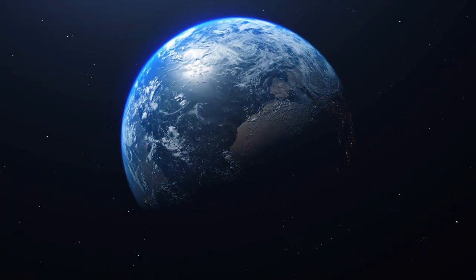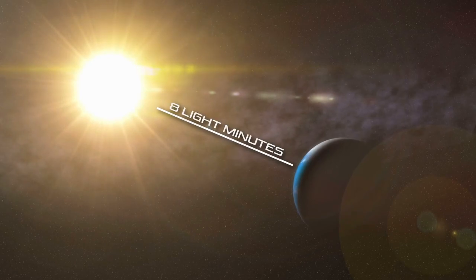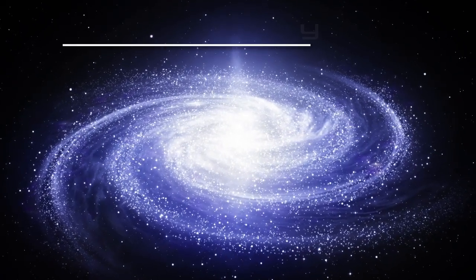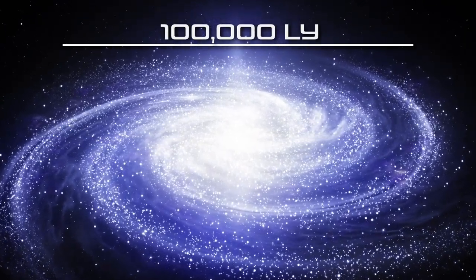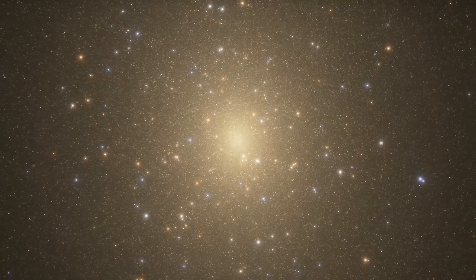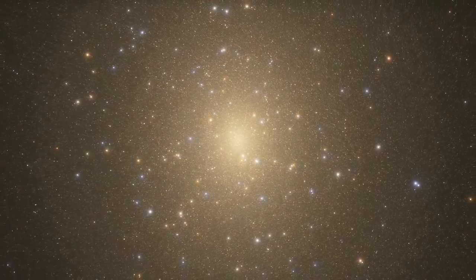Light can travel the entire circumference of Earth's equator seven and a half times per second. Earth is eight light minutes away from the Sun. Our own Milky Way galaxy is 100,000 light years across. The known universe is at least 96 billion light years in diameter, and it's expanding as you watch this video.